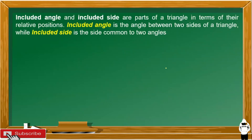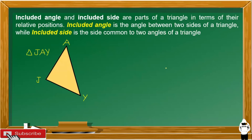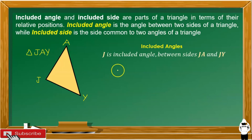We also have included angle and included side — these are parts of a triangle in terms of their relative positions. The included angle is the angle between two sides of a triangle, while the included side is the side common to two angles of a triangle. Let's look at triangle JAY.